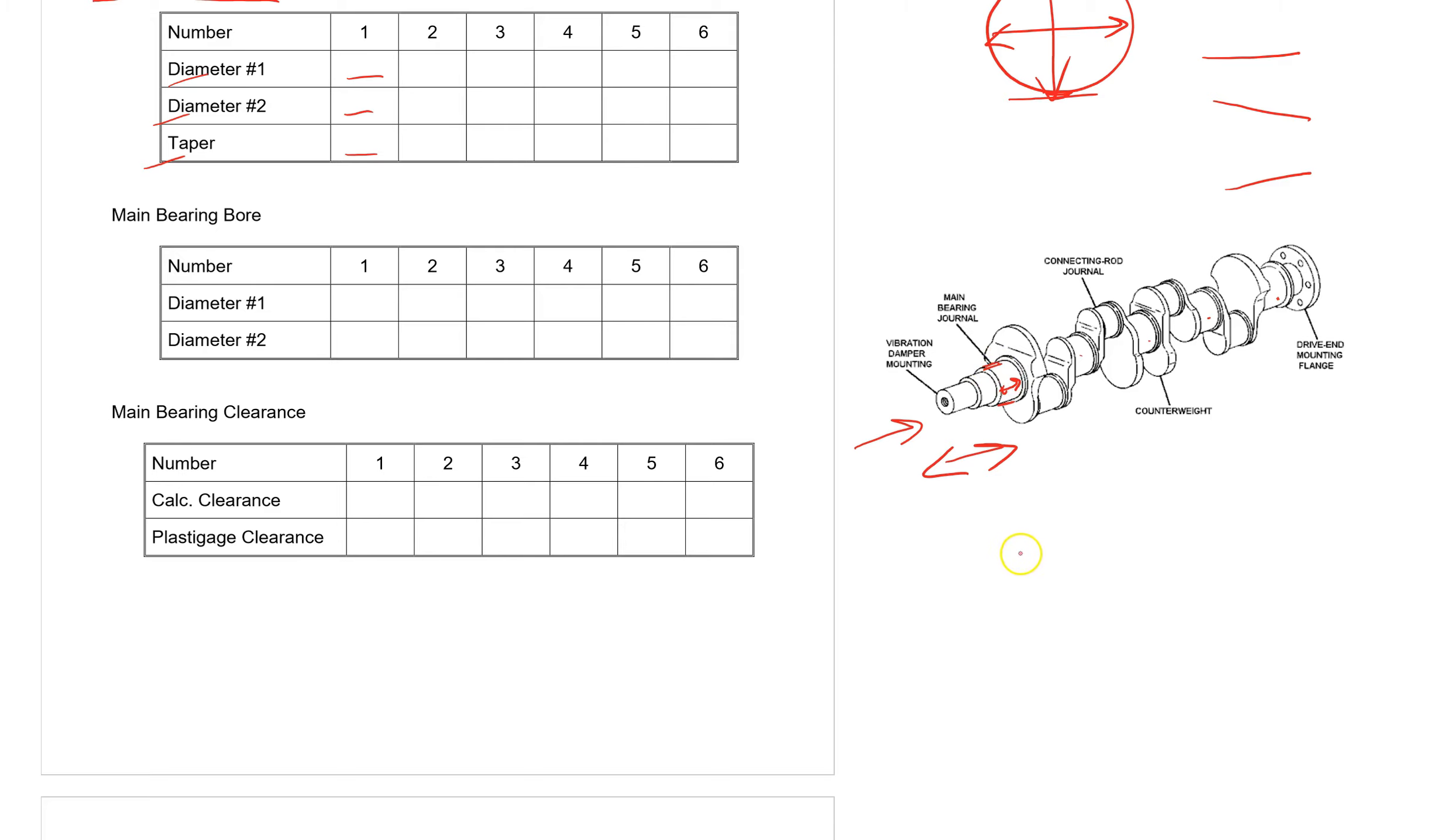So what you'll do is you'll have the bottom of the engine like that, and this will be the structure of the cylinder block. And then you'll have the main bearing cap right there. The main bearing cap needs to be attached with the bolts.